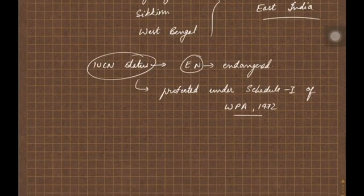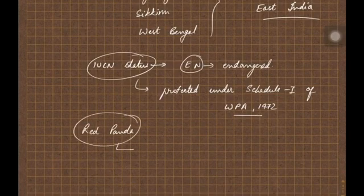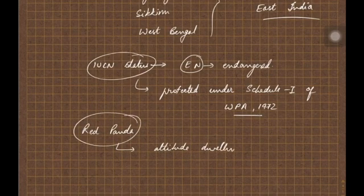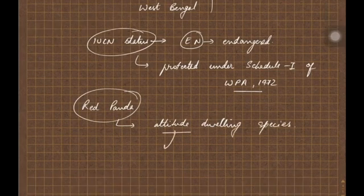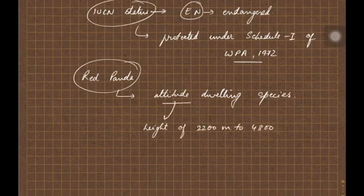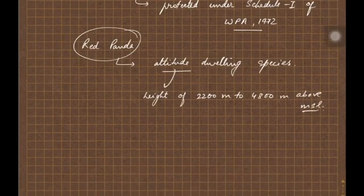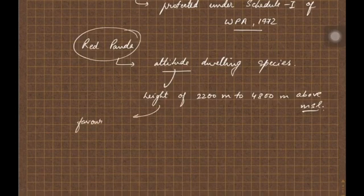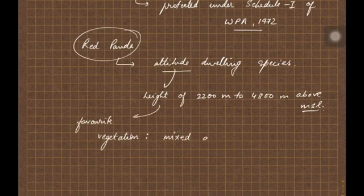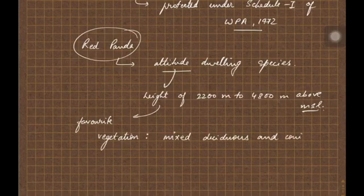It is facing grave danger. It is protected under Schedule 1, that is the highest level protection under Wildlife Protection Act 1972. Red Panda is an altitude dwelling species, found at heights of 2200 meters to 4800 meters above mean sea level.